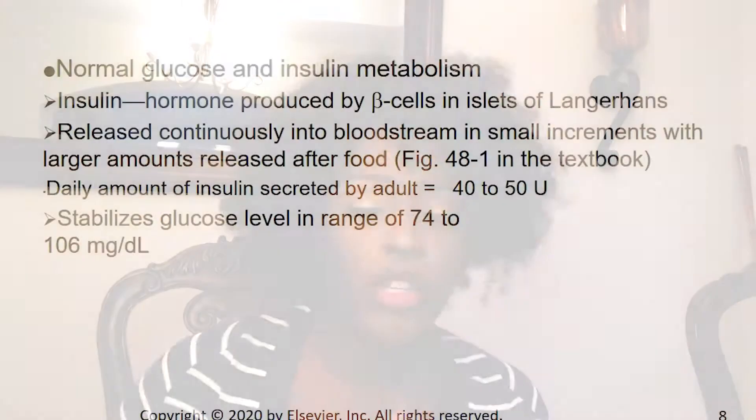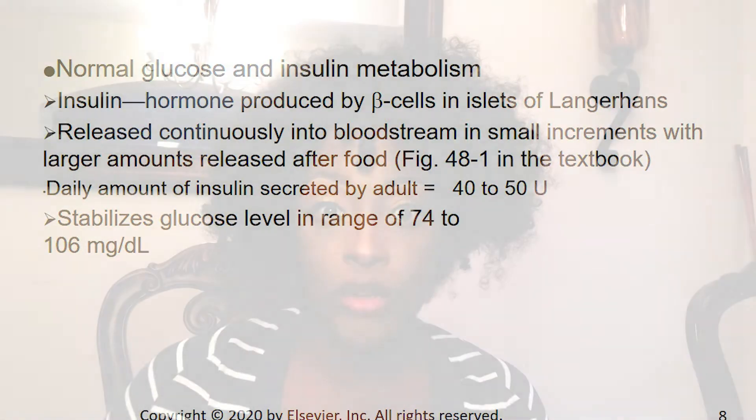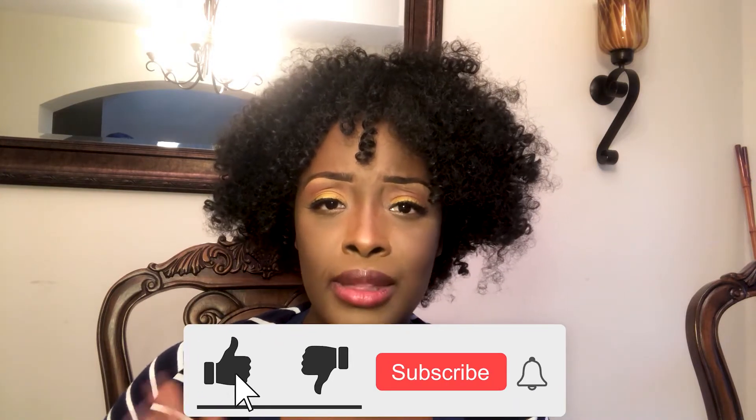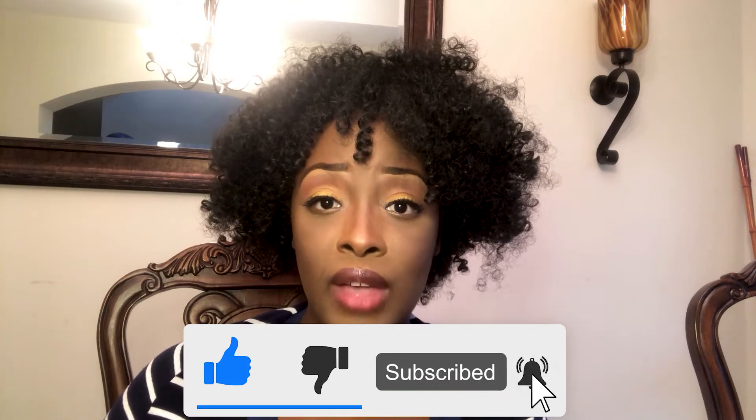The next thing I want you to pay attention to on this slide is the blood glucose level. It's very important — you're going to be questioned on it. You need to know what the normal fasting blood glucose ranges are. This one says 74 to 106, and the normal range depending on the textbook is about 70 to 110. If you're questioned on this, there's going to be a variation of about five points, and that's normal, so as long as you're within that range you'll be fine.